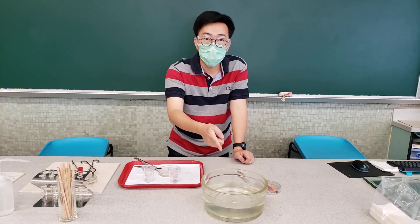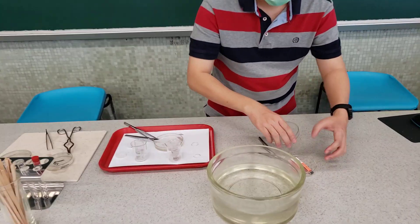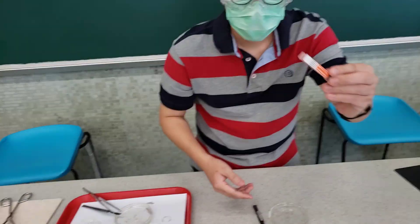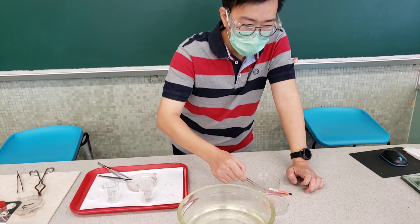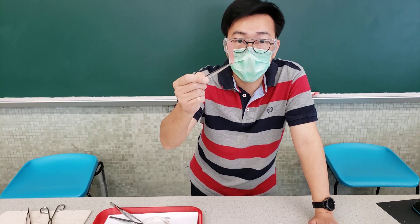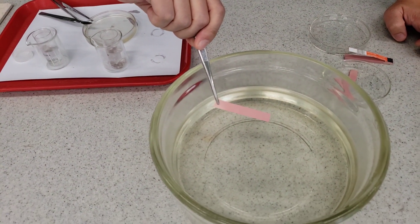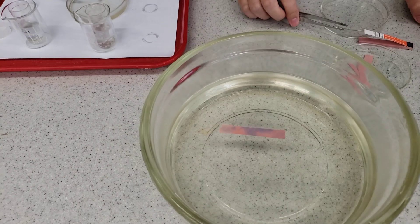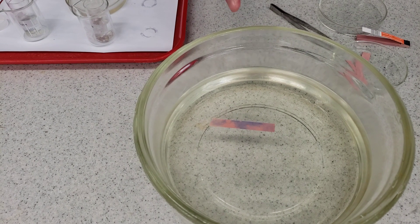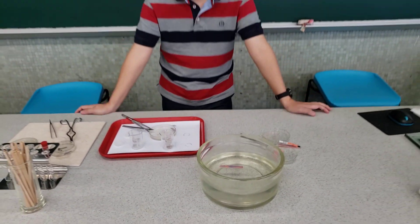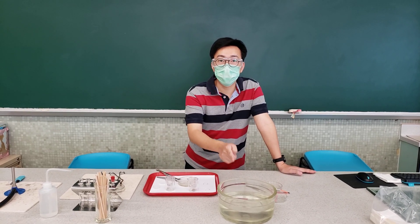What do you think of the water? Will there be any change about the water? Let me show you. This is red litmus paper. It is used to test for the acidity or the alkalinity of a solution. Let's see how a piece of red litmus paper will change. What did you observe? The red litmus paper turns blue, indicating that the water becomes alkaline.